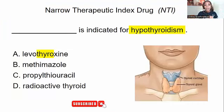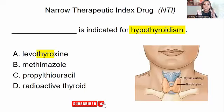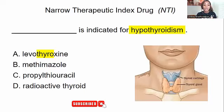Narrow therapeutic index drugs — NTI drugs — are drugs that require lab work to be done while the patient is on that particular medication. Levothyroxine is an NTI drug and does require lab work. While the patient is taking that medication, the doctor is checking panels and making sure the blood work is flowing properly. We want to make sure the drug is helping the patient and not harming them, because our job is to do no harm and reduce medication errors.